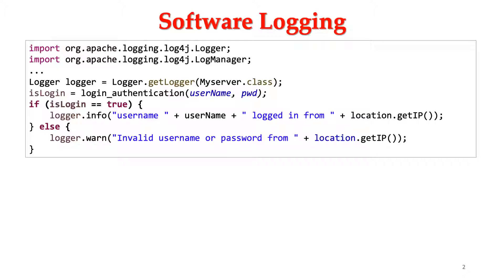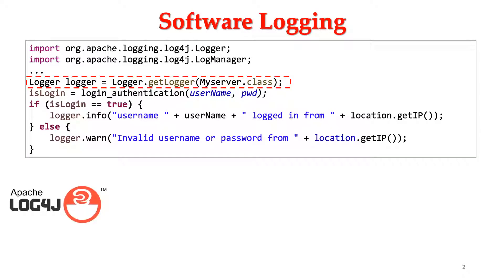First of all, what is software logging? Software logging is the practice that developers instrument logging code into the source code to record runtime behavior. This code snippet shows such an example. Depending on whether the authentication is successful, two lines of logging code will be executed during runtime. Compared to console printing such as system.out, here we use a logging utility from a popular logging library, log4j.